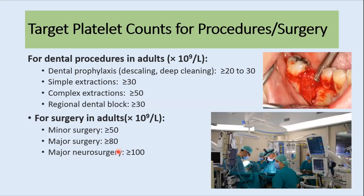Regarding target platelet counts for procedures and surgery: for simple dental procedures like deep cleaning or descaling, a platelet count above 20,000 is usually safe; for complex extractions, above 50,000 is needed. For minor surgery, the platelet count should be maintained above 50,000. For major neurosurgery, it should be above 100,000, and for major surgery, above 80,000.